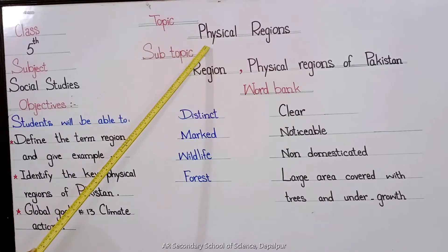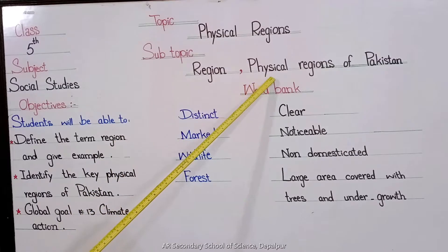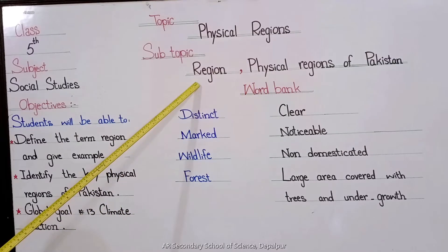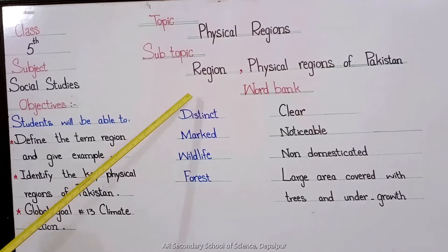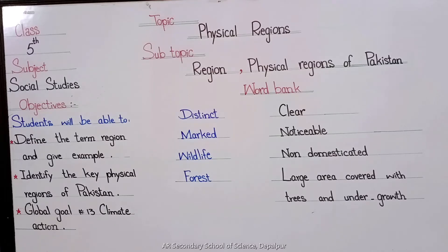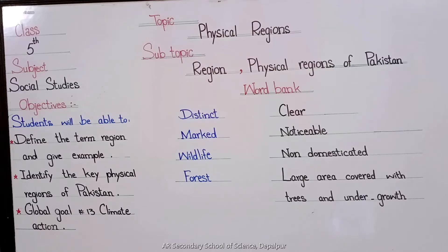Our subtopic is Region and Physical Regions of Pakistan. First we will know about region. Region कहते हैं जमीन के इलाके को — region is an area of land whose features set it apart from other areas. इसके कुछ features हैं जो इसे बाकी areas से different करते हैं, जो के हैं climate, wildlife, and forest.